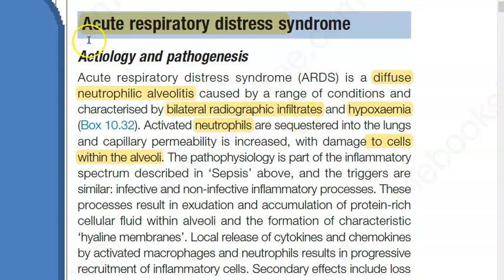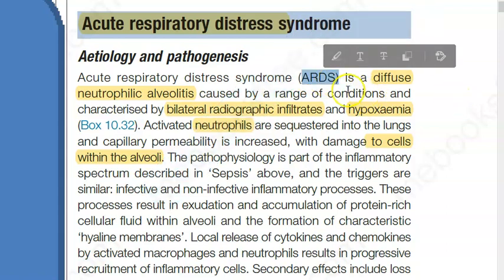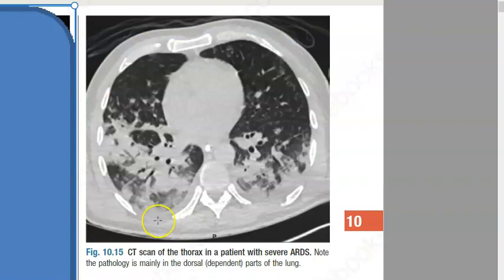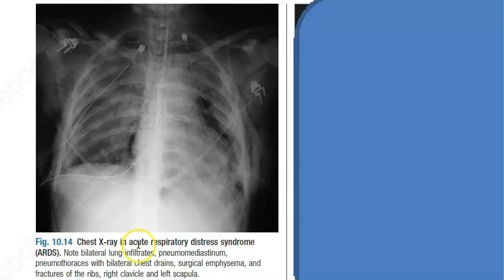In this video, let us look at the terminology acute respiratory distress syndrome, or ARDS. Basically, the lung is affected — especially the dependent parts. Look at this CT scan diagram: imagine the person is sleeping and you're taking the CT. You can see how the dependent parts of the lungs have a lot of infiltrates — neutrophils. Look at the chest X-ray: in ARDS, there are bilateral lung infiltrates.